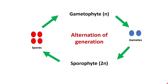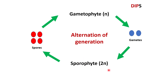When we talk about alternation of generation in plants, we should remember two terms: gametophyte and sporophyte. Gametophyte makes gametes and sporophyte makes spores. Sporophyte arises from gametophyte via gametes, and gametophyte arises from sporophyte via spores. Sporophytes are always diploid, and since sporophytes are diploids, gametophytes would be haploids.